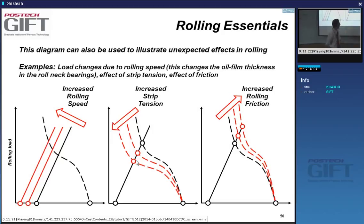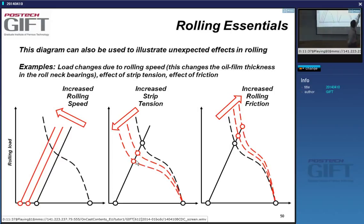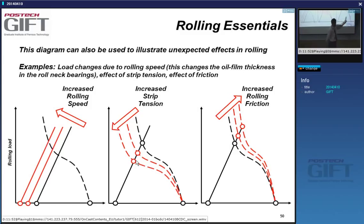Regarding friction: in a cold strip mill it's pretty much constant, but in a hot strip mill there may be variations. If you increase friction, it's as if you make the material harder — you get an increase in load and an increase in thickness. To compensate, you reduce the roll gap; the working point moves up and you achieve a smaller thickness again.